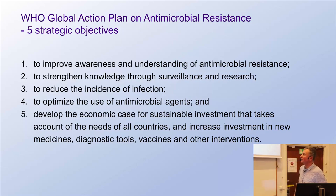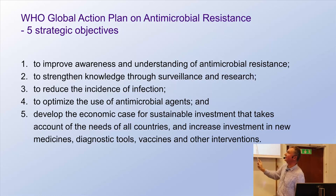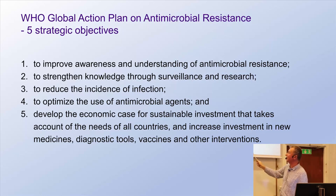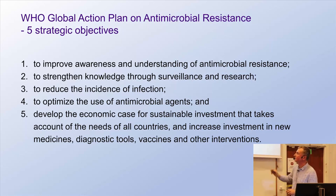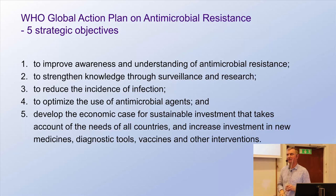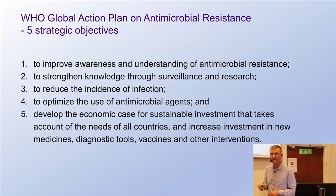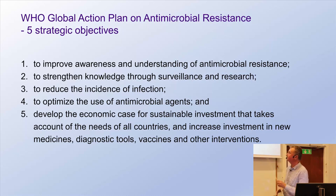To end with WHO again — what can we do on a global scale? We improve awareness of antibiotic resistance, which is why this lecture matters. We strengthen knowledge through surveillance: how many resistant bacteria are in the country, how much antibiotic do we use? We reduce the incidence of infection by stopping the spread of resistant bacteria — for example through infection prevention and control in hospitals. We can also use vaccines and immunization. We are seeing measles outbreaks in the US because people don't want their children vaccinated. And we can optimize the use of antimicrobial agents.